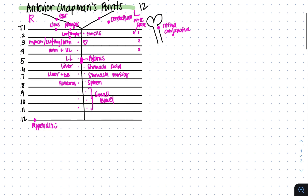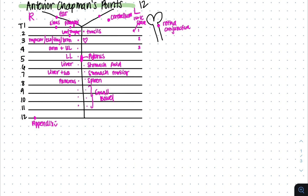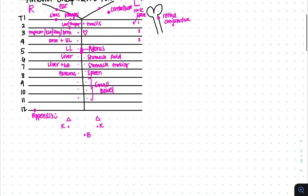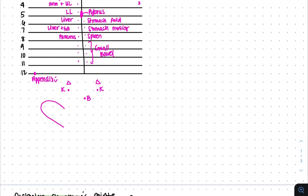There are a few more anterior Chapman's points that are easy to remember. Your umbilicus is your bladder. One inch lateral and superior, you'll have your kidneys — and what sits on top of your kidneys? Your adrenal glands. So kidneys are one inch lateral and superior, and adrenals are one inch lateral and two inches superior to your umbilicus. You'll have your innominates. At your pubic tubercle, you'll have your ovary and urethra. At your inferior innominate, you'll have your uterus.